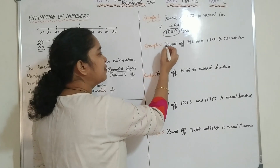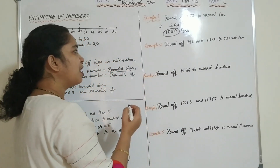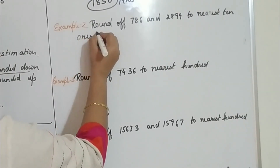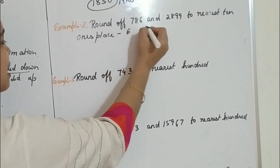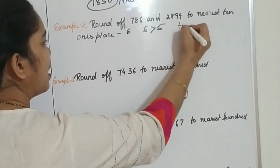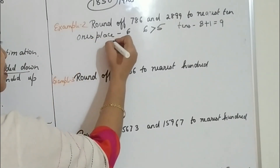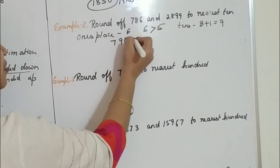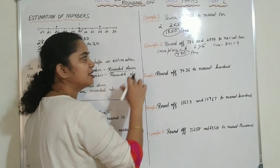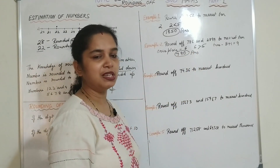Another example: round off the number 786 to the nearest 10. You have to see the number in the 1s place, which is 6. Since 6 is greater than 5, in the 10s place the number will increase by 1 — that is 8 plus 1 equals 9. And the 1s place becomes 0, so the final number will be 790. It is rounded up to the higher number.